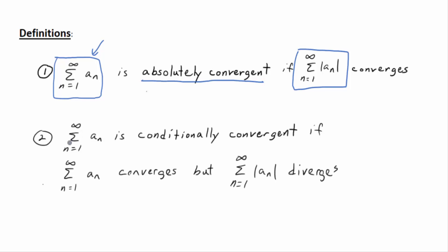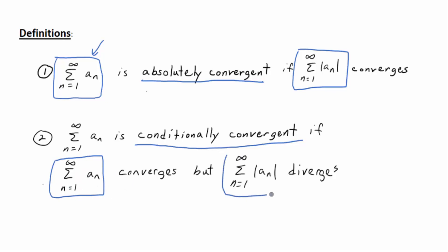Definition number two: the series sum from n=1 to infinity of aₙ is called conditionally convergent if it converges but not absolutely — that is, if the sum of aₙ converges but the sum of the absolute values of aₙ diverges.